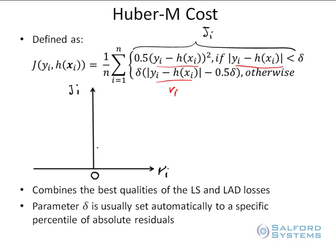At zero residual, we have a perfect prediction. In the case of least squares cost, the contribution to the error component is on a quadratic scale — it looks like a nice parabola. For the LAD cost, the shape of the penalty is different: while both start at zero, under LAD you have a linear penalty that goes linearly in both directions. With the quadratic cost, if you double the residual you quadruple the penalty. With LAD cost, if you double the residual you double the penalty — it is linear.